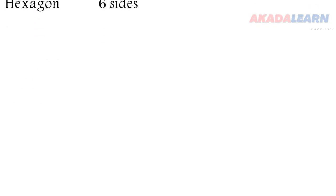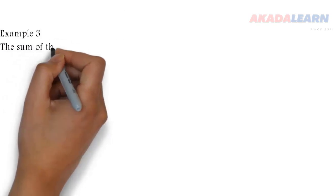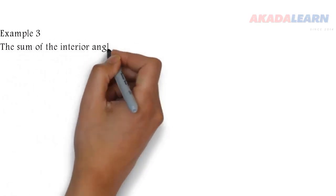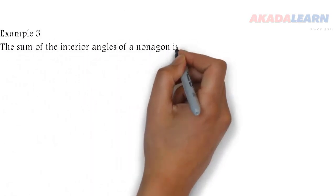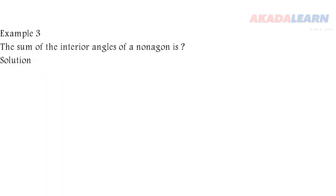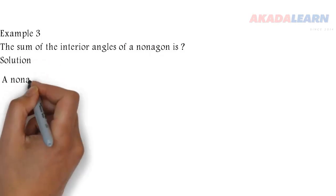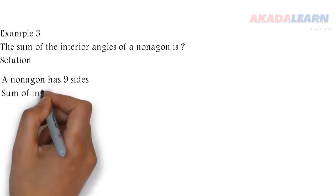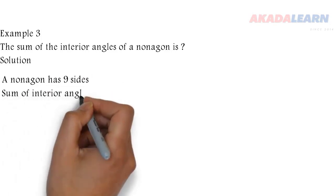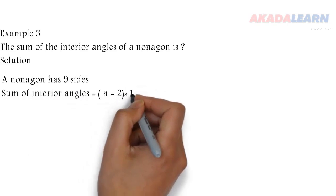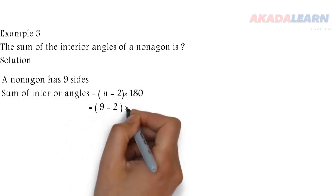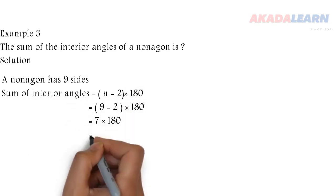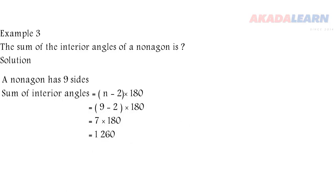Okay, let's look at another example with a polygon — finding the sum of the interior angles. First we have to know how many sides a nonagon has. A nonagon has 9 sides. So we apply our formula: (n-2) times 180 degrees, substituting the value of 9. We get 7 times 180, which is 1260 degrees.